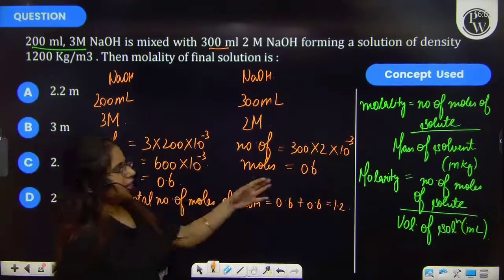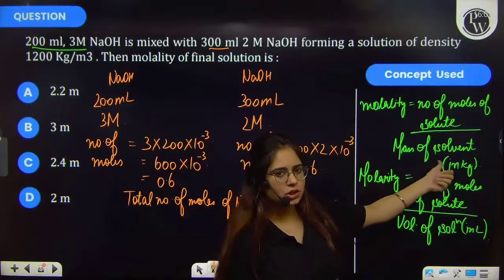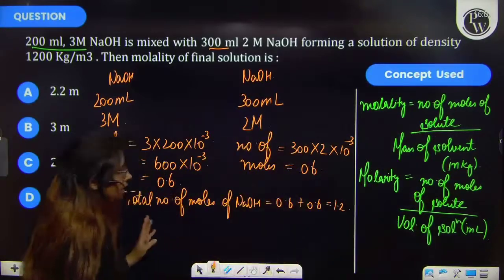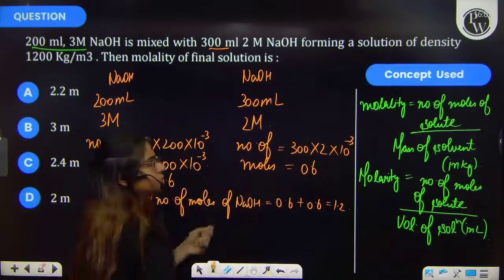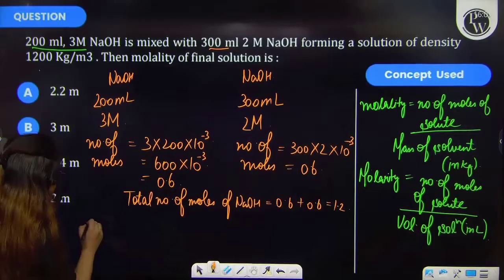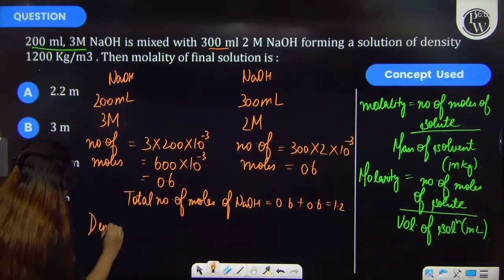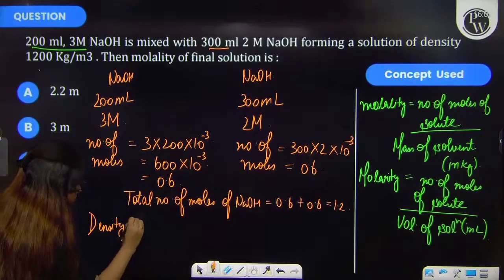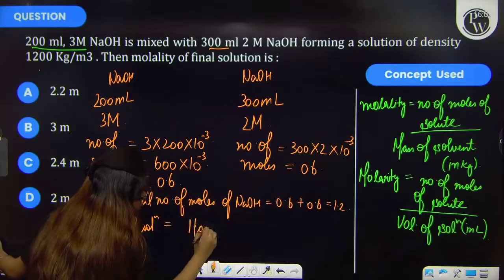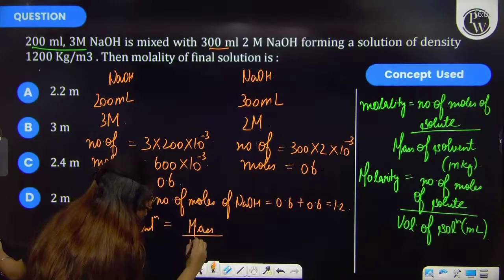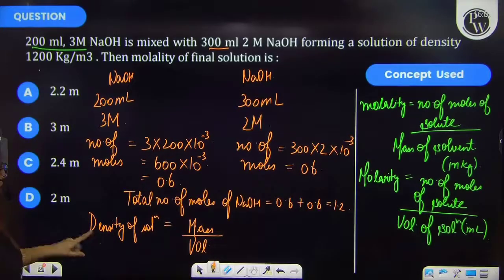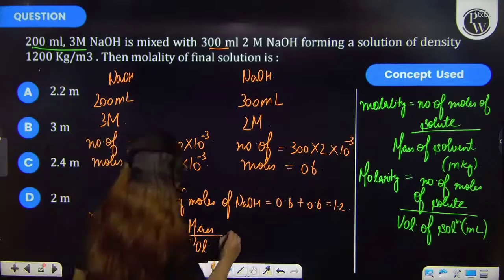Further, for finding molality, I have to find the mass of solvent. Number of moles of solute I have found but now I have to go for mass of solvent. And we have been provided with density of the solution. So let's try to find by this. Density of solution is mass of solution upon volume of solution.